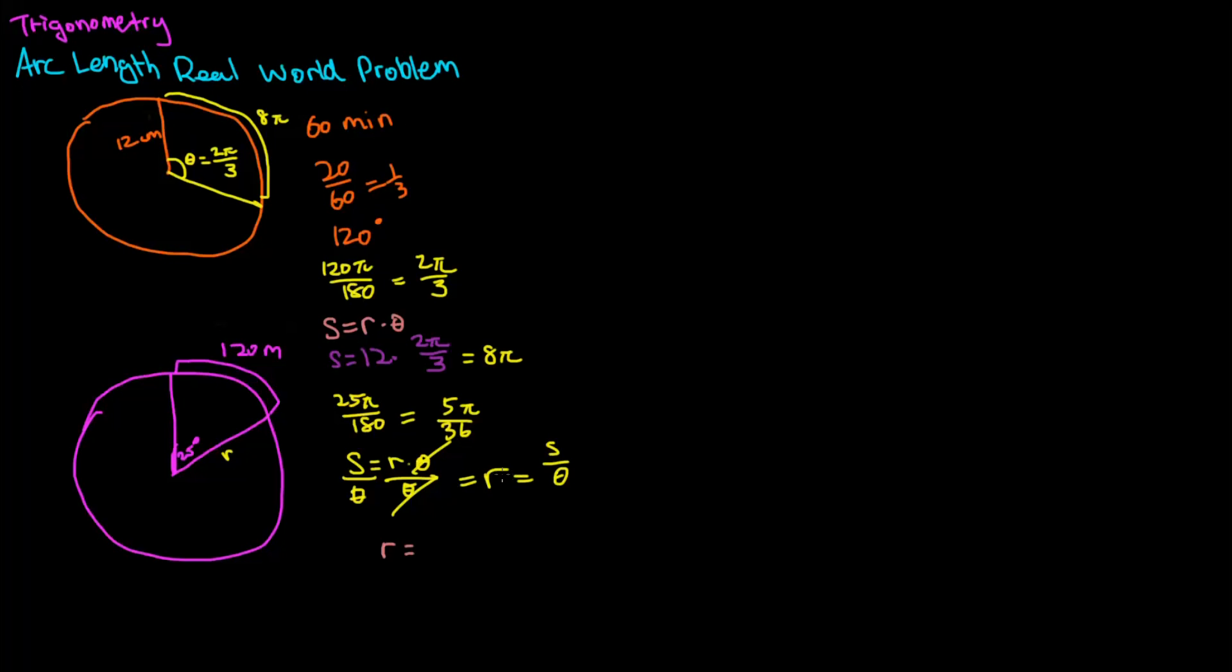So radius is equal to 120 divided by 5 pi over 36, which can also be written as 120 over 1 multiplied by the reciprocal of 5 pi over 36. We can go ahead and simplify that, and we will end up with 864 over pi, and that is approximately 275 meters.